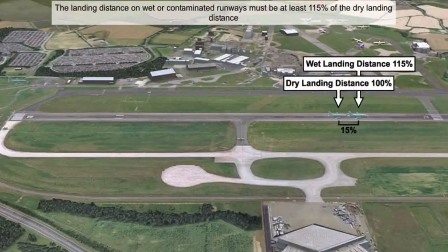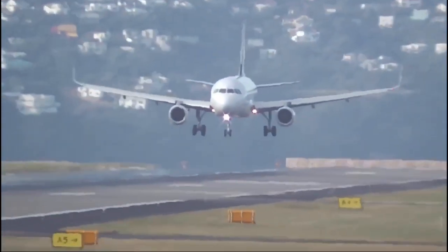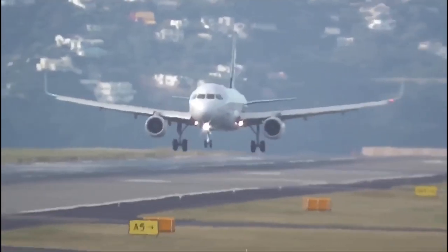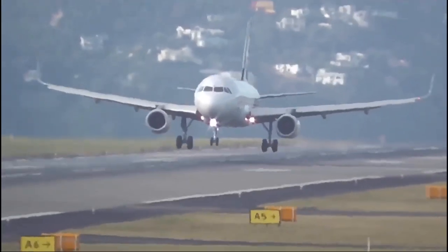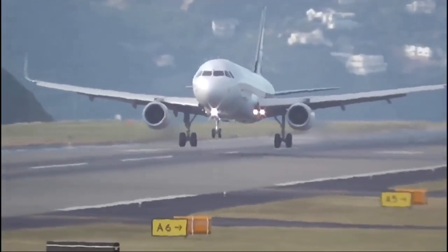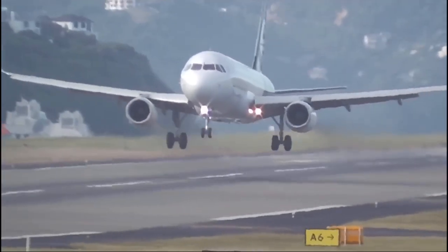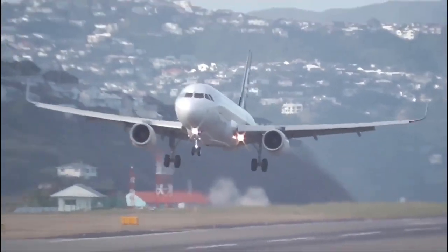Considering other factors: if the weather or forecast indicates the runway is contaminated or wet at the estimated time of arrival, the landing distance must be at least 115% of the dry landing distance. Even with this 15% increase, the aircraft must still land within 70% of the runway for turboprop and 60% for turbojet engines.